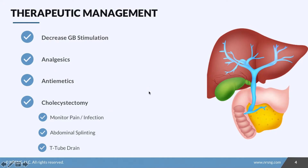To manage cholecystitis, the first thing we want to do is decrease the amount of gallbladder stimulation. We want to keep patients NPO — if there's no food coming in, we won't stimulate it. We can also place the patient on an NG tube, which will decompress the stomach so that not even stomach acid will make its way into the duodenum, leaving very little stimulation of the gallbladder.